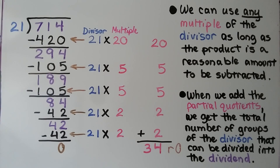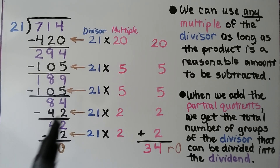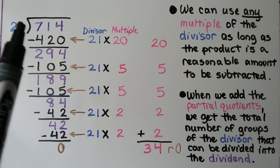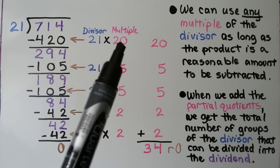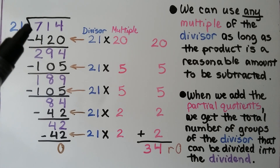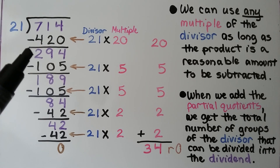We can use any multiple of the divisor as long as the product is a reasonable amount to be subtracted. Here we're using 20: 21 times 20 is 420. We subtract it from 714 and get 294.